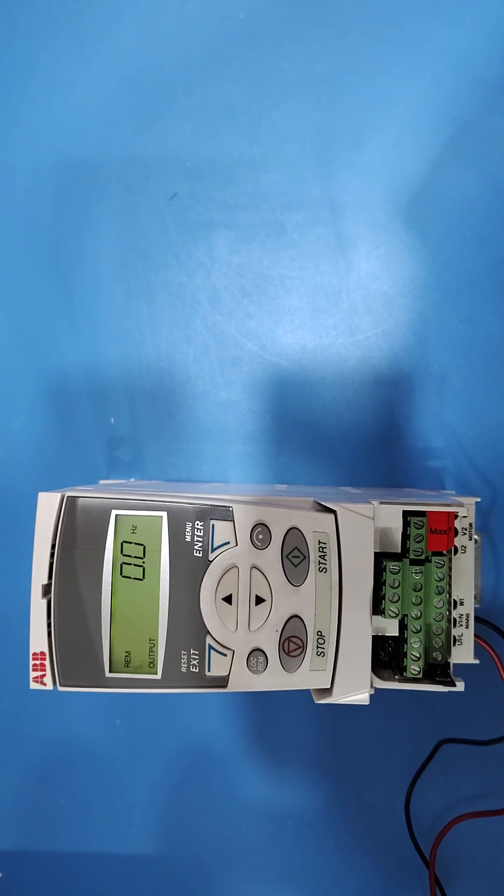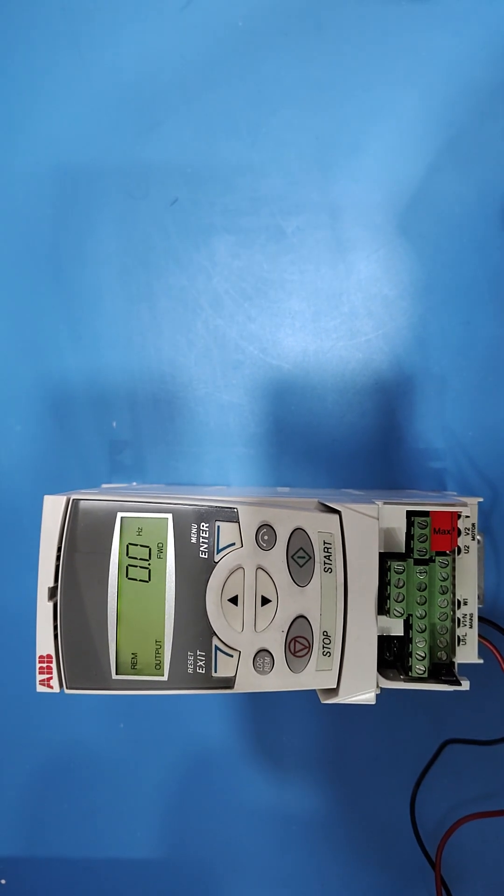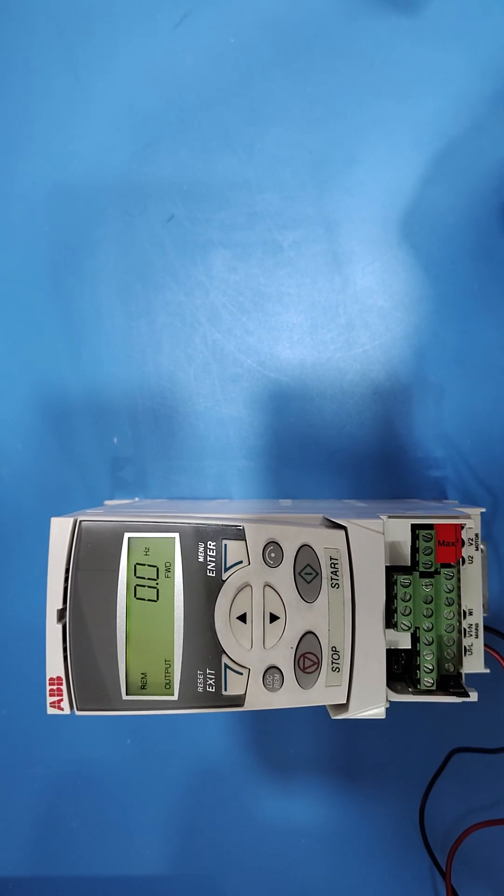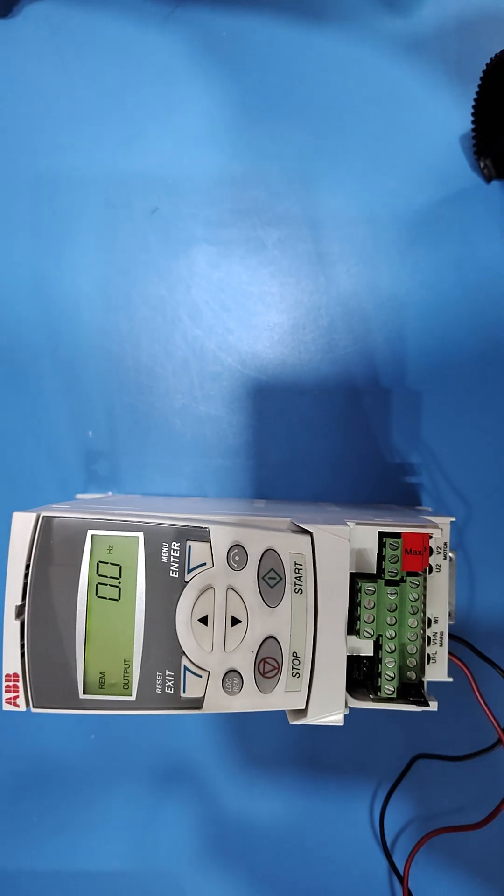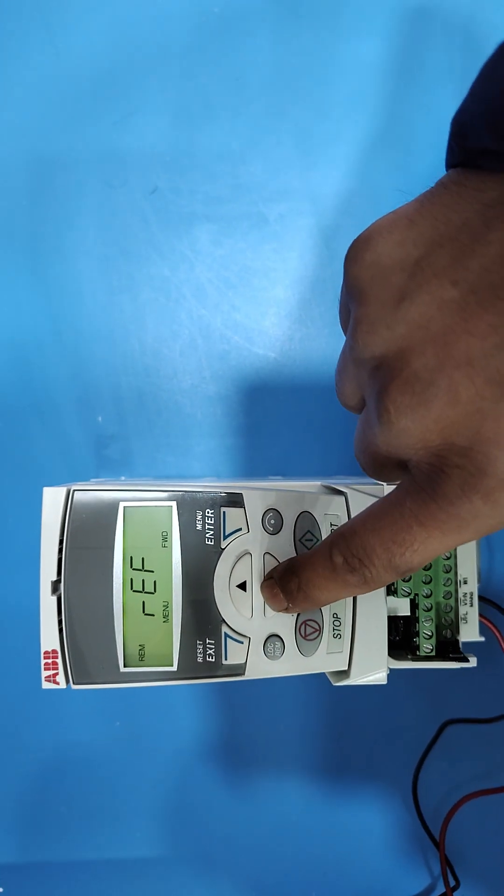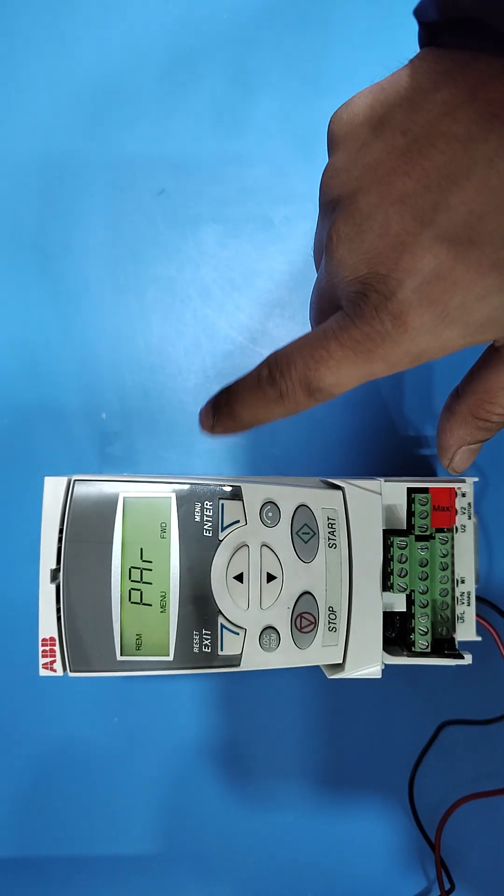How to save minimum and maximum frequency in ABB-ACS310 drive. If you want to set minimum and maximum frequency in ABB-ACS310 drive, follow this process. Press enter button, select REF, press down key and go to PAR. When PAR shows, press enter button.